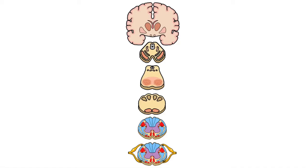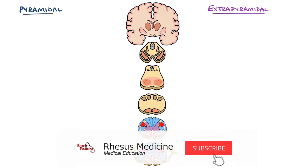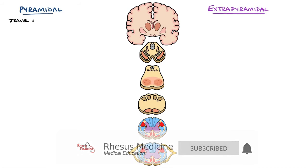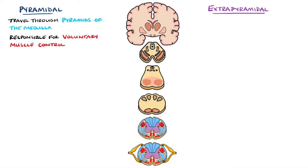The descending pathways carry motor signals down the spinal cord and are generally divided into pyramidal or extrapyramidal tracts. The pyramidal fibres travel through the medullary pyramids of the medulla oblongata, which is why they are termed pyramidal. These fibres originate in the cerebral cortex and are responsible for the voluntary control of the muscles of the body and of the face. There are two different tracts that make up the pyramidal tracts: the corticospinal and corticobulbar tracts.